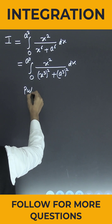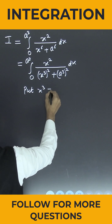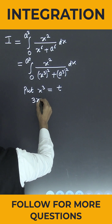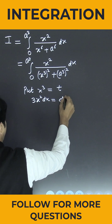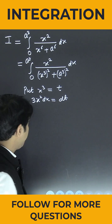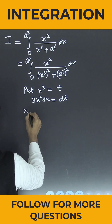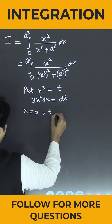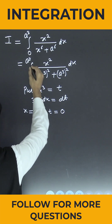Let me simply put x³ equal to small t. So what will happen? Then 3x² dx is nothing but dt. I have to change the limits of integration. When x is equal to 0, the value of small t is also 0.